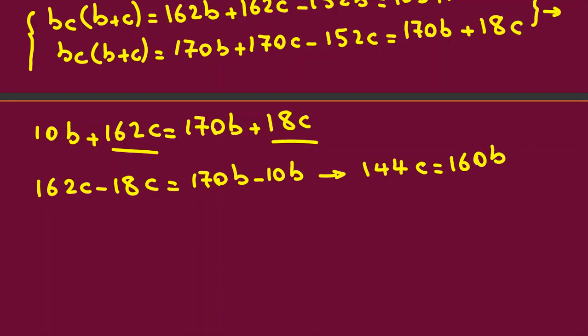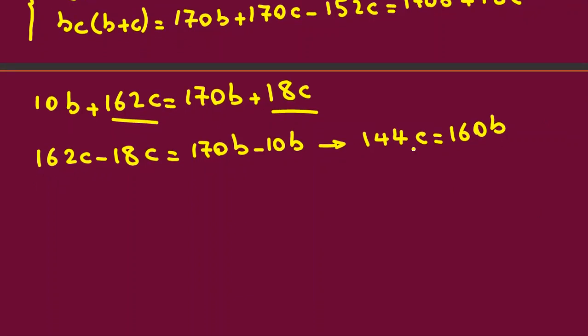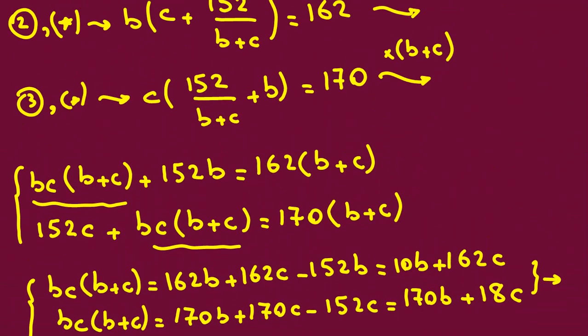Now here 144 is what? Do you know it's what times what? My factorization is 9, 3 squared times 16. It is this times 16 times 10b. So you can cancel 16, 16. One good thing we've reached: 9c equal to 10b. So we found b and c in terms of each other.